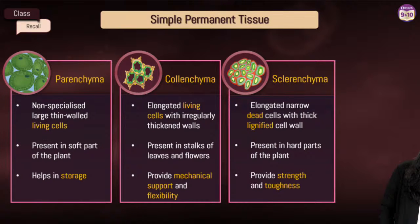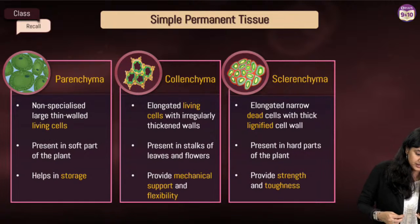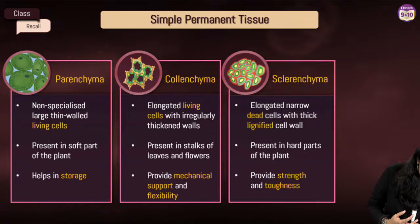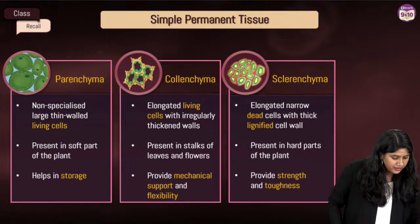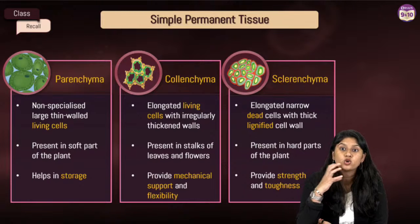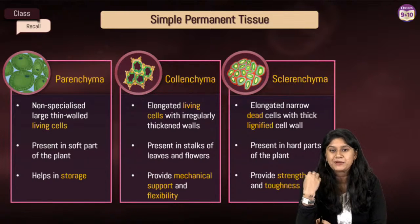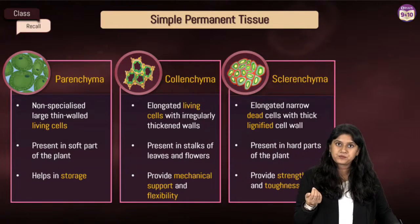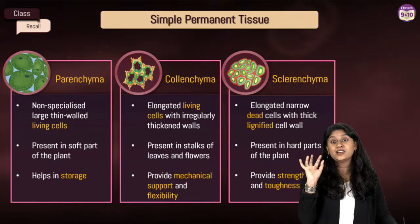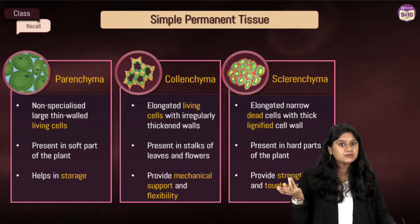Sclerenchyma provide strength and toughness. Please take a screenshot quickly. The husk of a coconut is made up of sclerenchyma. The seeds of guava are also made up of sclerenchyma. Remember these examples.